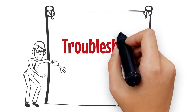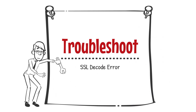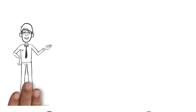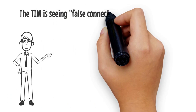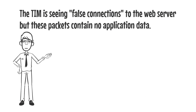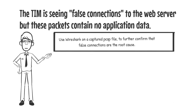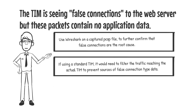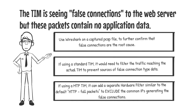Let's troubleshoot each of these scenarios. The TIM is seeing false connections to the web server, but these packets contain no application data. Use Wireshark on a captured PCAP file to further confirm that false connections are the root cause. If using a standard TIM, it would need to filter the traffic reaching the actual TIM to prevent sources of false connection type data. If using an MTP TIM, it can add a separate hardware filter, similar to the default HTTP full packets, to exclude the common IPs generating the false connections.